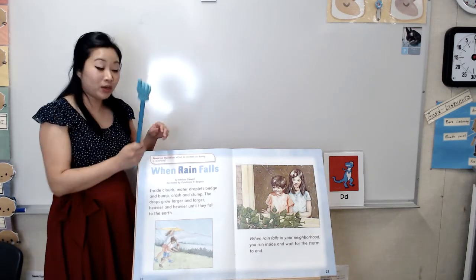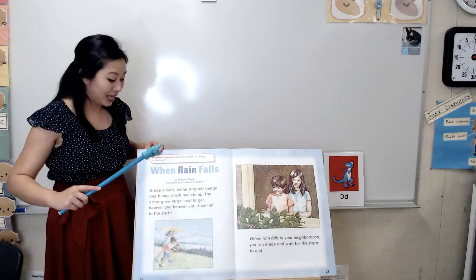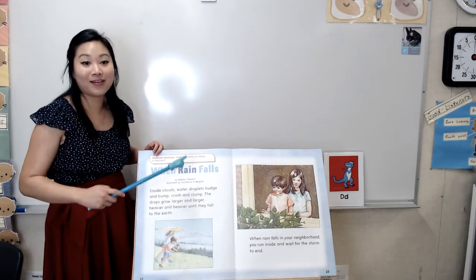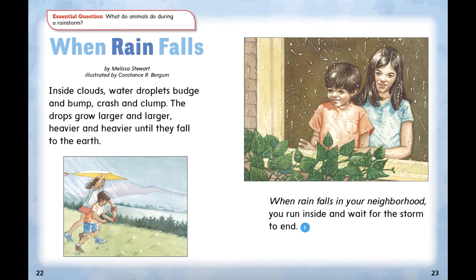Let's read our story. And remember, when we read, we go from left to right, across, and top to bottom. This is the first word and the last word on this page. Essential question: What do animals do during a rainstorm? When Rain Falls by Melissa Stewart, illustrated by Constance R. Burgum. Inside clouds, water droplets budge and bump, crash and clump. The drops grow larger and larger, heavier and heavier, until they fall to the earth. When rain falls in your neighborhood, you run inside and wait for the storm to end. I'm going to predict what the author is going to talk about next. I predict the author will tell how the weather affects the children. Maybe the story will tell what the children will do as they wait for the storm to end — they might play a game or read a book. That's what I would do while I wait for the rain to stop.